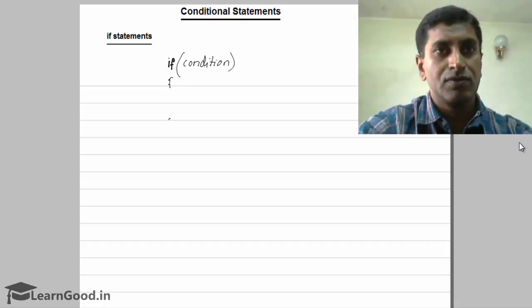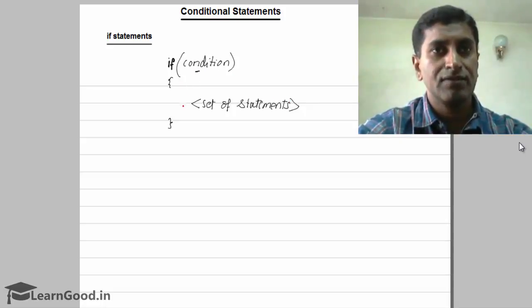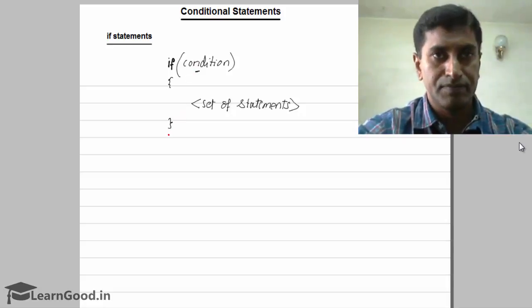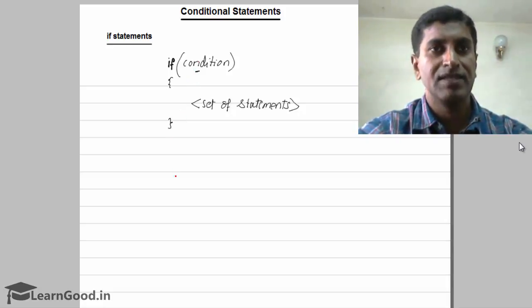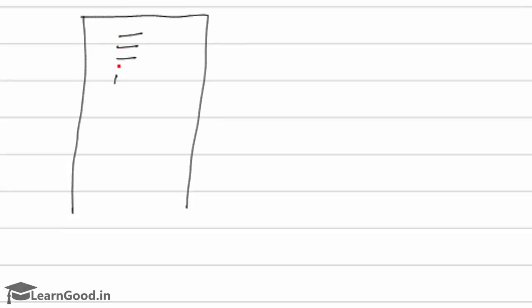If the condition is true, it will execute the set of statements. Otherwise, it will skip the set of statements and jump to the next part to continue execution. In a program, you have an if statement with a given condition, and the group of statements is kept within open and closed curly braces.